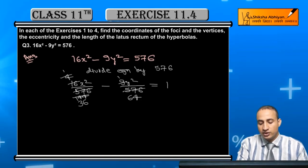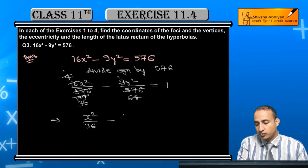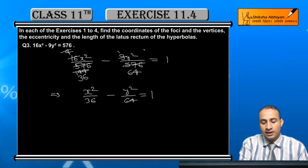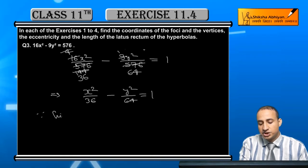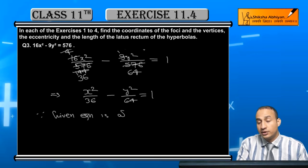So equation will become x²/36 - y²/64 = 1. Since given equation is of this form, therefore on comparing we get...